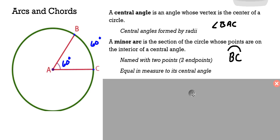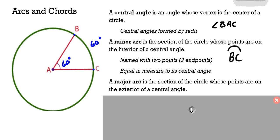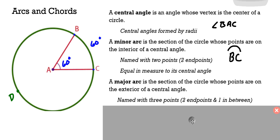You can probably see where we're going with the other type of arc. If we have a minor arc, it stands to reason that the major arc is the section of the circle whose points are on the exterior of the central angle. We can't name that major arc yet because we need three points. We use two endpoints and one in between. The middle letter just has to be in between. If you were to travel along from B along the circle to C, any other point that it passes through could be that middle value.